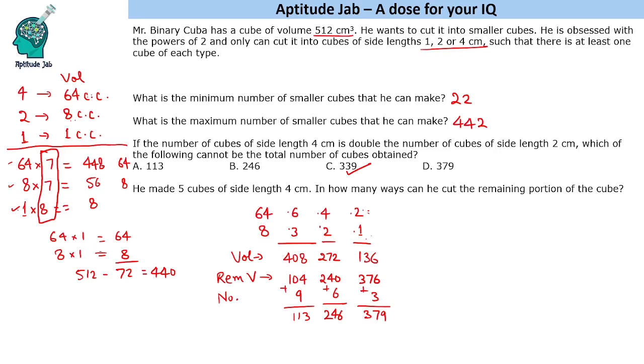The next question says, he made 5 cubes of side length 4 cm. In how many ways can he cut the remaining portion of the cube. He has already made 5 cubes of dimension length 4 that is 64 volume. He has already used 320 cm cube. Total volume is 512. If we subtract from it, we get the remaining volume as 192.